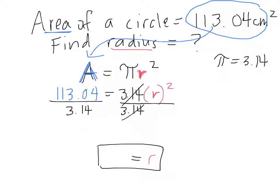113.04 divided by 3.14 equals 36, which means 36 equals r squared. But I need to know what r equals. So again, opposite operations. What's the opposite of squaring a number? Square root.